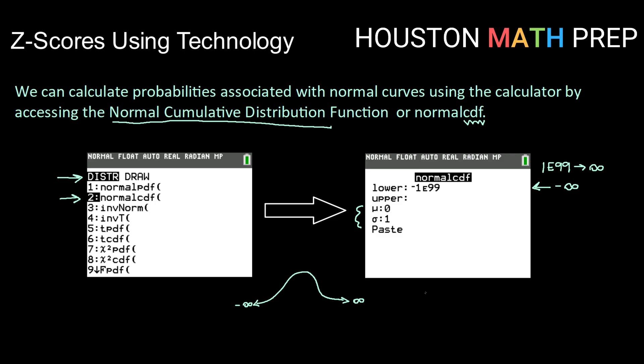Now, if you're working with a different calculator or a calculator with an older operating system, just remember that the way you would type this in is normal CDF, you would put in your lower bound whatever that is, your upper bound whatever that is, then you would type in your mean, then your standard deviation, close your parentheses, and hit enter. You would get the same value as if you had this menu.